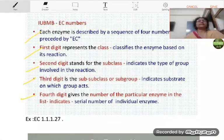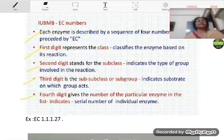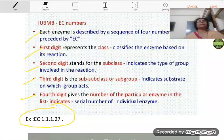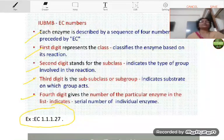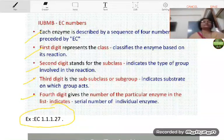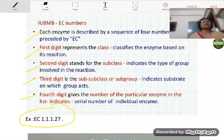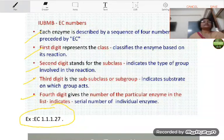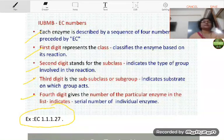And this code number of the enzyme we are going to understand with this example. Suppose the example or the code number of the enzyme is EC 1.1.1.27. Students, as we discussed here that each enzyme is described by a sequence of four numbers. Here also four numbers are 1.1.1.27.